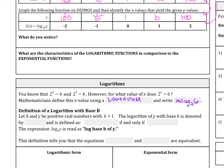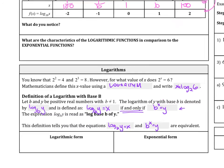So the definition of logarithm with base b, let b and y be positive real numbers with b not equal to 1. The logarithm of y with base b is denoted by log base b of y. And it's defined as log base b of y equals x. This is true if and only if b to the x equals y. And so this should look familiar to us from our exponentials. This definition tells you that the equations log base b of y equals x and b to the x equals y are equivalent.